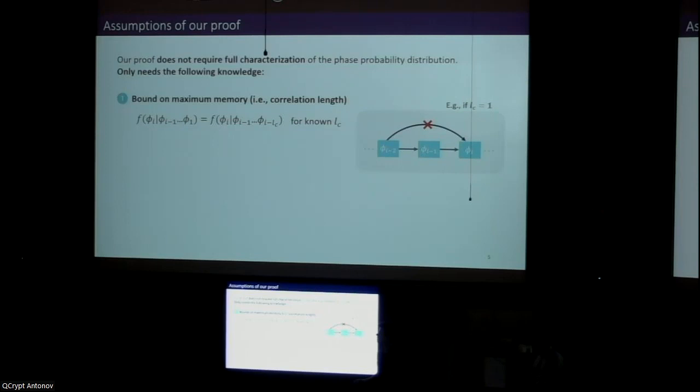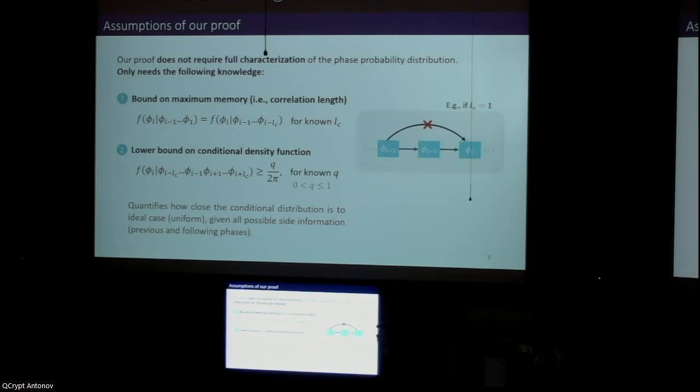The second condition is that we have a lower bound on the conditional density function of each phase given information of all the previous and following phases that have information about it. The lower bound is parameterized by this q, which essentially quantifies how close the conditional distribution of each phase is to the ideal uniformly random case given the worst case scenario in which the eavesdropper holds all possible side information that she could hold about it.